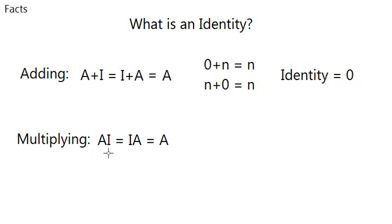For multiplication, if AI is equal to IA and equal to A, then it must be this. 1 times n equals n and n times 1 equals n. So the identity of multiplication is 1. What about matrices? Let's see in the next example.